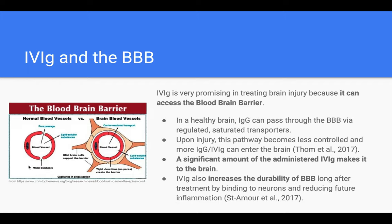I wanted to talk about the relationship between IVIG and the blood-brain barrier, because this is CRAB and we care about the brain. For those who don't know, the blood-brain barrier — if you check out the image on the right — is essentially extra protection around the blood vessels in the brain to make sure that certain harmful molecules don't get into the brain. In a healthy brain, immunoglobulin can actually pass through the blood-brain barrier through regulated saturated transporters.